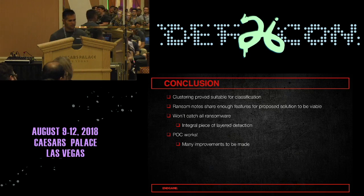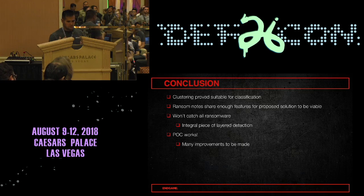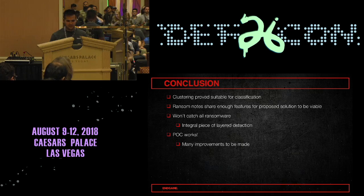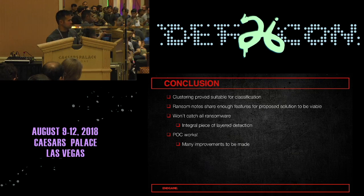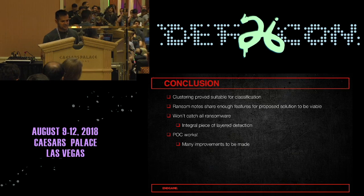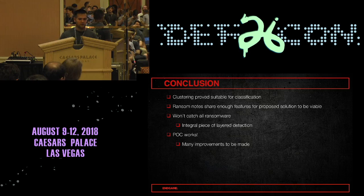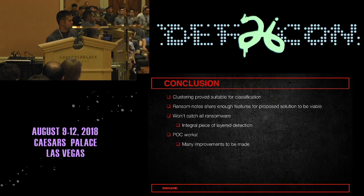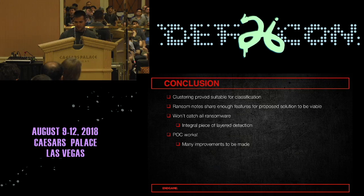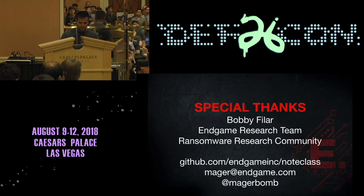To wrap things up: clustering gave us a good idea that the data is suitable for classification, and we saw that ransom notes share enough features for a solution to be viable. We realize this isn't going to catch all ransomware, but it could be a very integral piece of a layered detection approach alongside a static classifier. The proof of concept did work, but there are definitely many improvements to be made. Thank you very much.